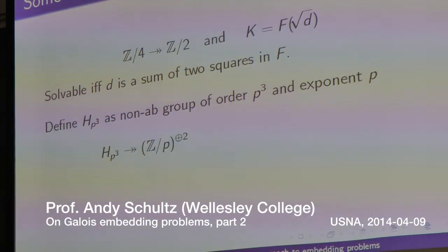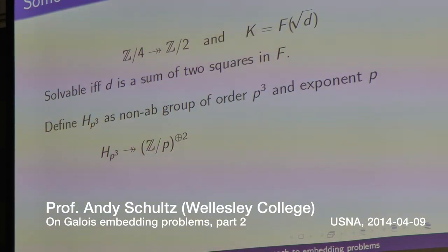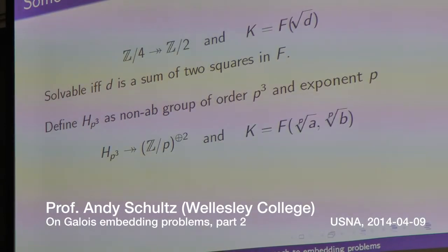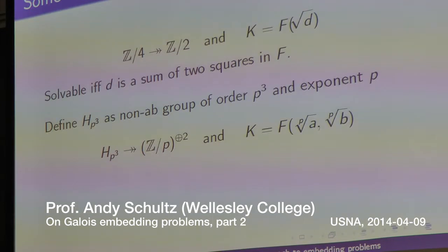There is a natural surjection of that group onto Zp cross Zp. If you assume you have the right roots of unity, then any extension that looks like Zp cross Zp is generated by adjoining two p-th roots of things that are independent from each other modulo p-th powers.